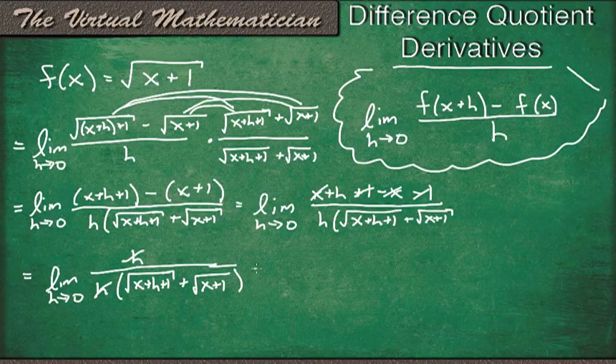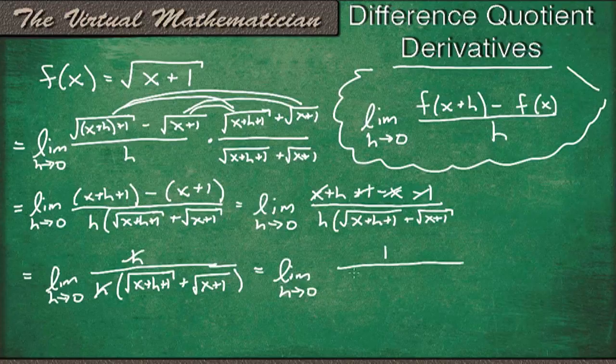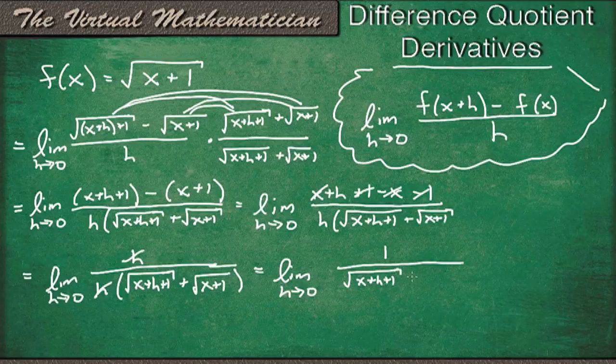And we're just going to be left with the limit as h goes to 0 of 1, because when they cancel, we're left with 1 over square root x plus h plus 1 plus square root x plus 1. Now we can evaluate this limit.